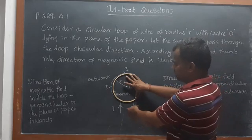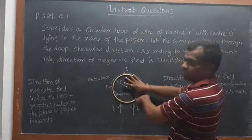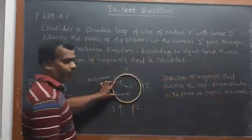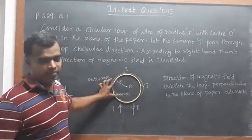Now the current is passing through in clockwise manner, given in the question paper. The current is passing in clockwise manner, and they said apply the right-hand thumb rule to find out the direction of magnetic field.